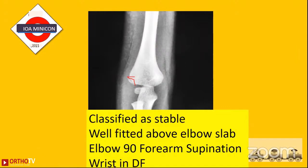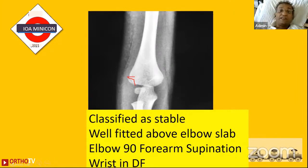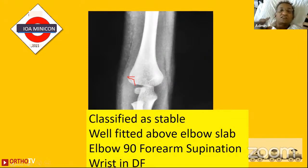On internal rotation view, this is just a metaphyseal fracture not going completely into the epiphysis — we classify this as a stable fracture. There is no need for MRI or arthrogram. Admit the child and apply a well-fitting slab with the wrist in extension, because the common extensor origin is attached here, and the forearm in supination. We use a slab rather than plaster because we need an X-ray at one week.